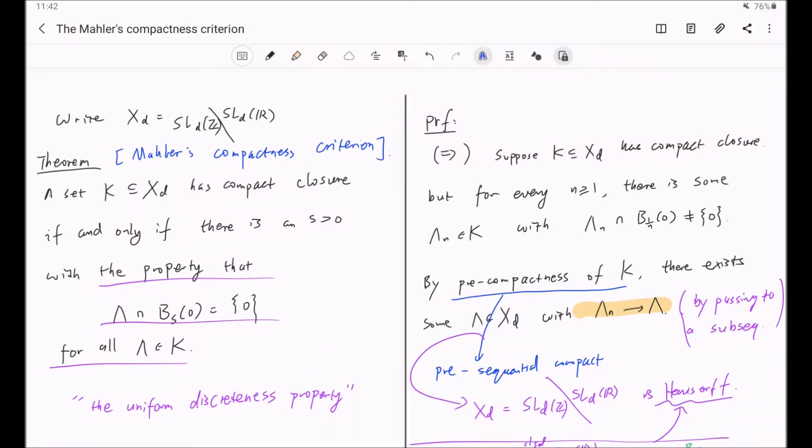The other direction, however, is a little bit technical. Suppose we start with the uniform discretized property, namely this property, and now we want to prove that the subset K is precompact, namely it has compact closure.